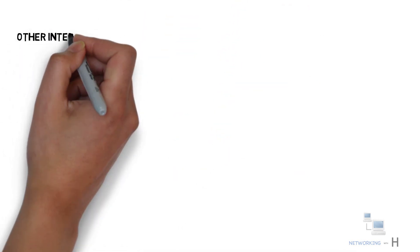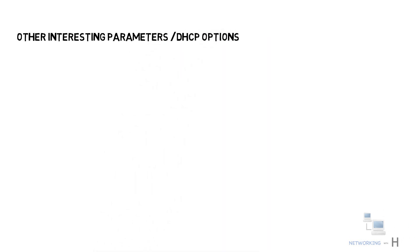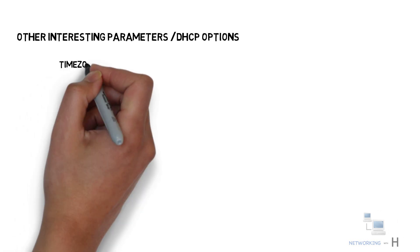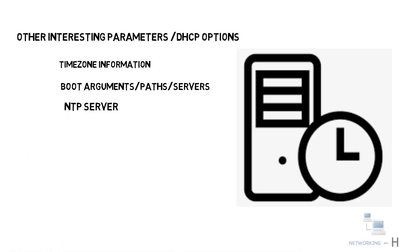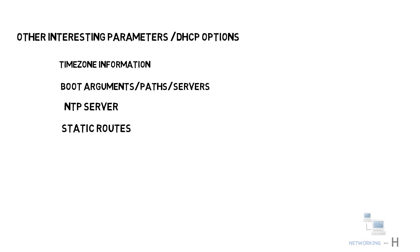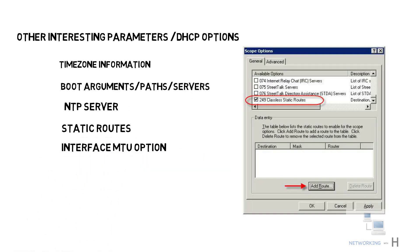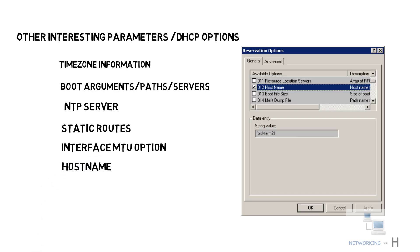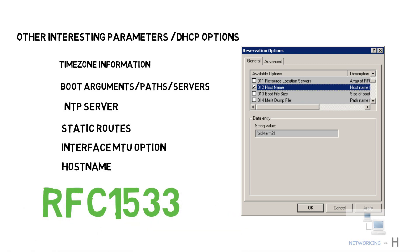Other than dynamically assigning IP addresses, DHCP also provides various other parameters known as DHCP options, such as time zone information, boot argument paths, NTP server, static routes, interface MTU options, and the host name of the client — very useful for IoT and devices without a user. For more information on DHCP options, please refer to RFC 1533.